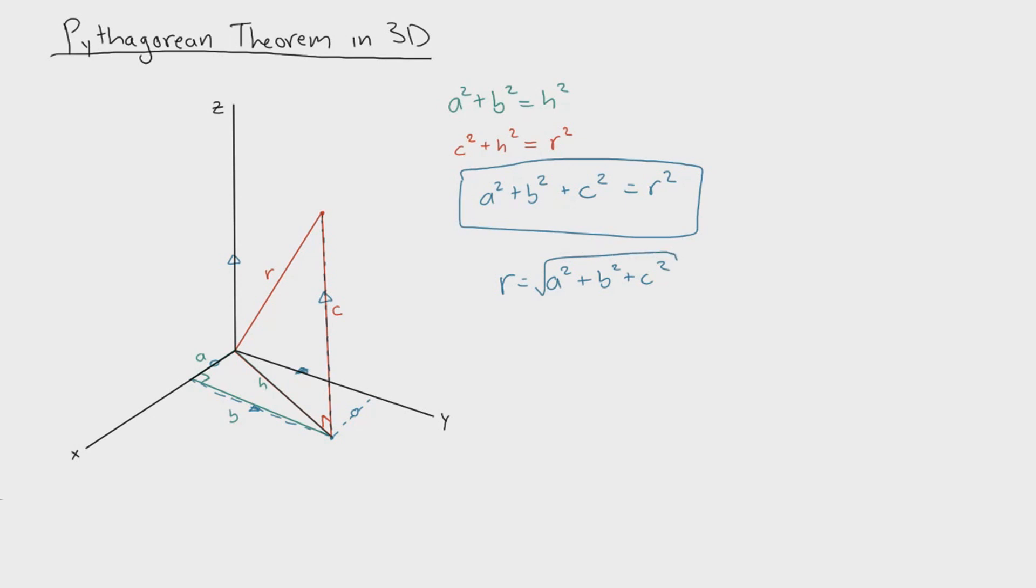Now you may be asking, what if the values of a, b, or c are actually negative? So maybe a point that lies over here, which is being projected over here,